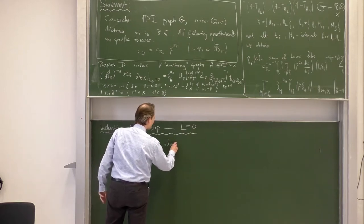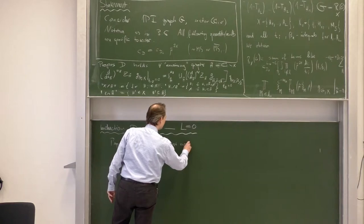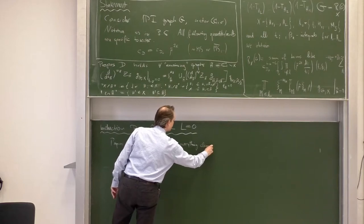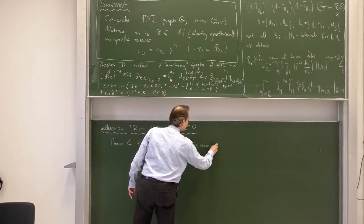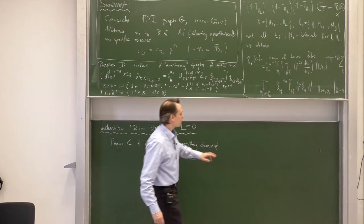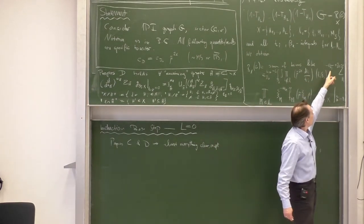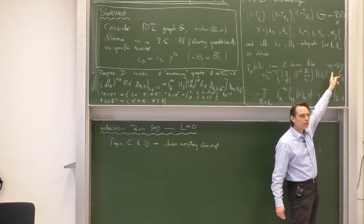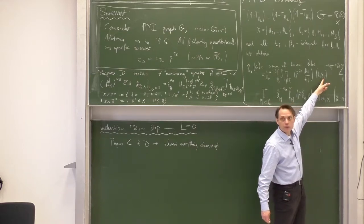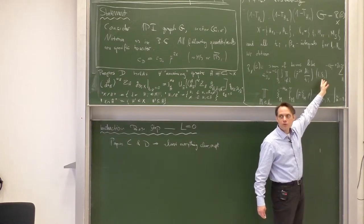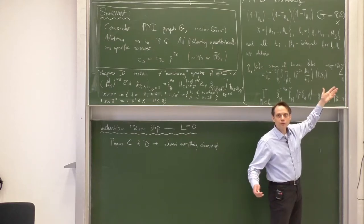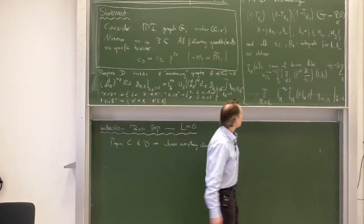Almost everything is clear with one exception: the integration measure is now written in a different way. It contains omega H-bar, while previously we had omega H without bar, and now we have the xis instead. So we just need to show that our previous way and the current way to write the measure are the same.